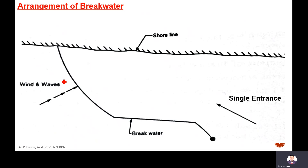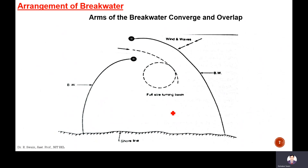The single entrance — these are the wind direction and wave direction, so the alignment is made curved. Here is another alignment — these are the types of alignment of the breakwater. This is the overlap alignment.